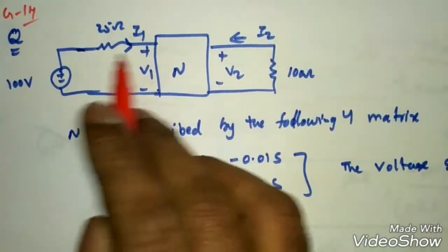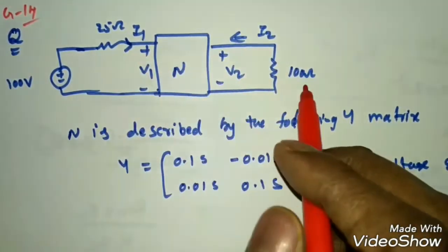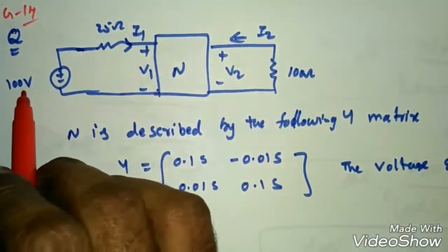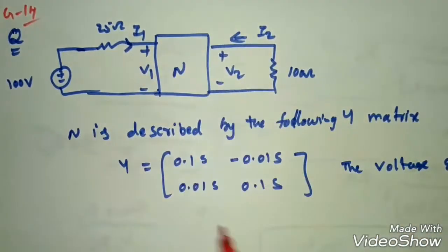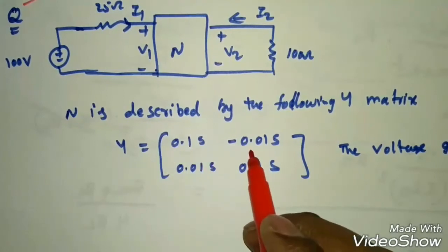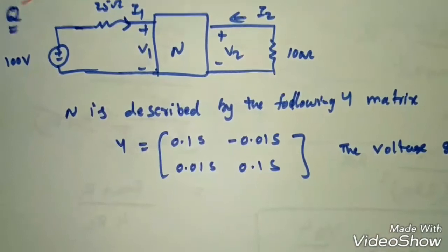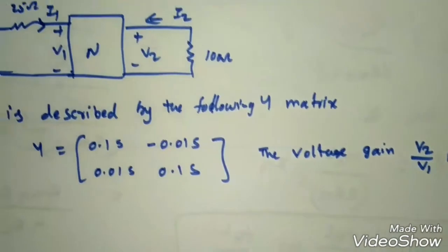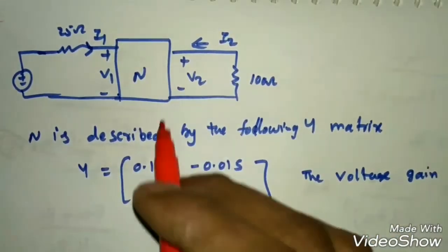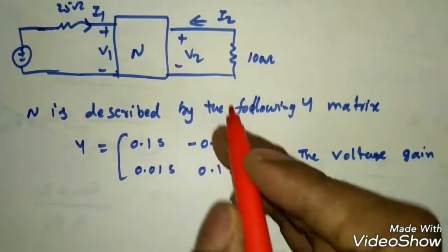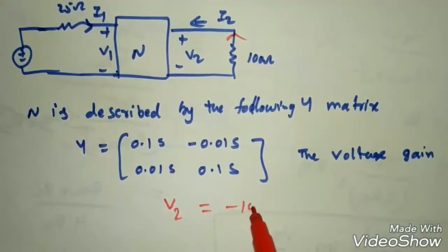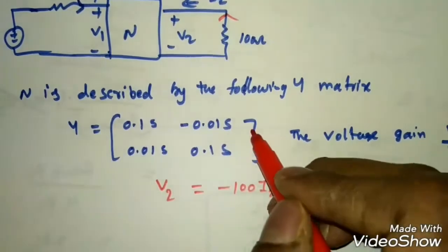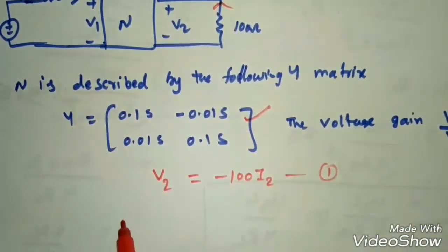A previous GATE question: a two-port network N has a Y-matrix given as [0.1, −0.01; 0.01, 0.1] siemens. Load resistance = 100 Ω, source voltage = 100 V, source resistance = 25 Ω. Find the voltage gain V2/V1. Looking at the output: V2 = −100 I2 ... (equation 1).